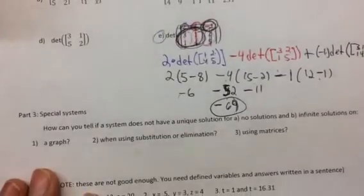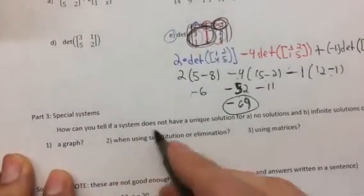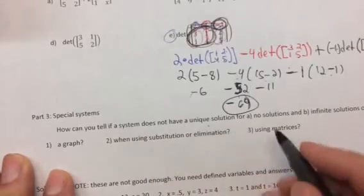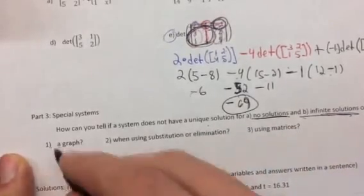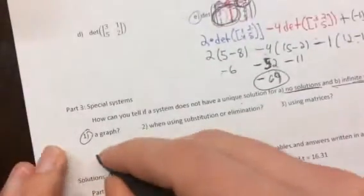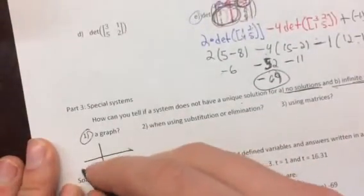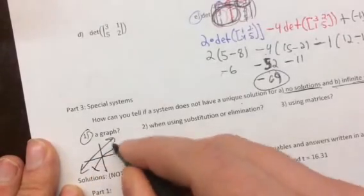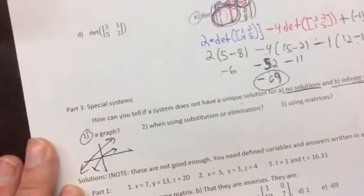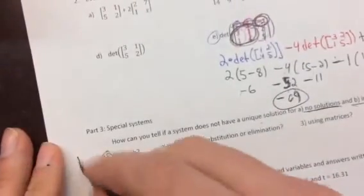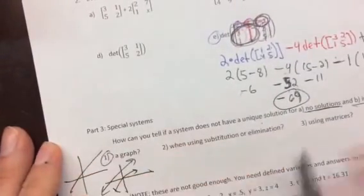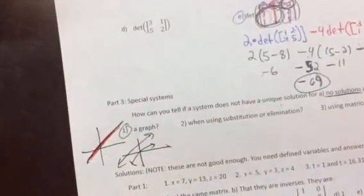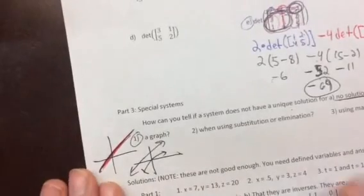Real quick, how do you tell if a system does not have a unique solution for no solutions and infinite solutions on a graph? Well if there's a graph there are no solutions when there are no intersections because where they intersect is where the solutions are. There are infinitely many solutions if on a graph they intersect infinitely many times, which would be if they're like right on top of each other. So that would be in a graph how we can tell if there's no solutions or infinitely many solutions.